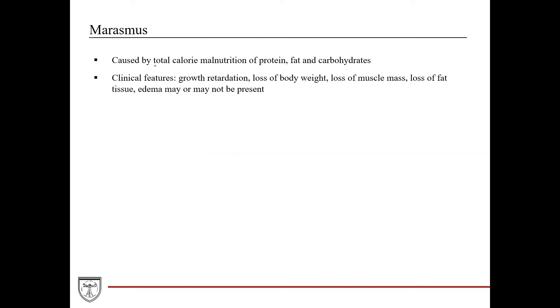Marasmus is caused by total calorie malnutrition of protein, fat, and carbohydrates - just total inadequate energy intake. Clinical features include growth retardation, loss of body weight and muscle mass, and loss of fat tissue. During prolonged starvation you switch from using carbohydrates to using fats and amino acids, resulting in breakdown of fatty acids and loss of adipose tissue, eventually leading to breakdown of protein and loss of muscle mass and other critical organ tissue. In this disorder, edema may or may not be present.